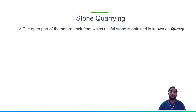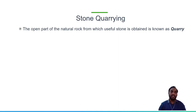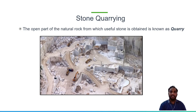Next is stone quarrying. The open part of natural rock from which useful stone is obtained is known as a quarry. It is a place where we excavate rock from hills. If it is a soft rock, it can be easily obtained using some tools. If it is hard rock, a different method is needed. This is a marble quarry, where stones are being cut down in equal shapes and sizes carefully because of their utility.